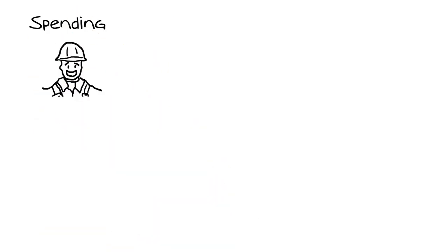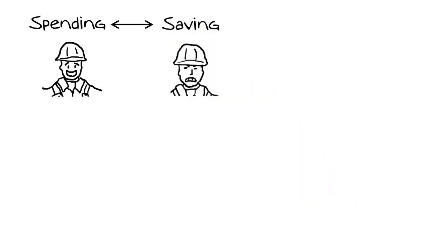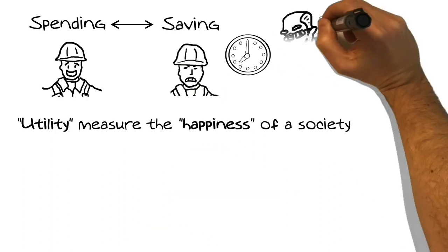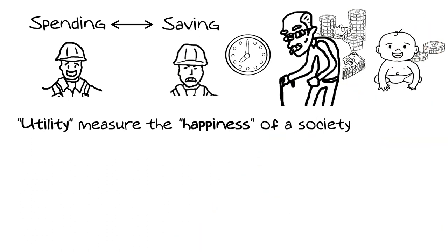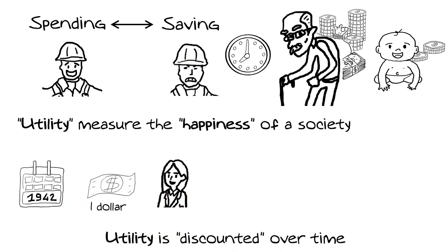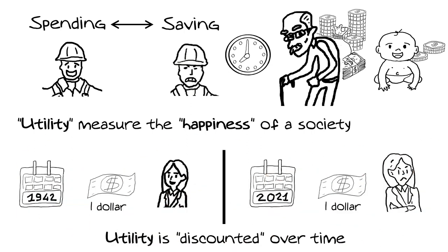In economy, the word utility is used for measuring people's satisfaction and increases with spending. Time is also important — a policymaker could make everyone happy by spending everything now, but then the next generation will end up in trouble. We must also consider that utility changes depending on when we spend money. With a dollar spent in 1942, we could buy more things compared to a dollar spent in 2021. So a policymaker must pay attention not only to how much money is spent but also when it is spent.